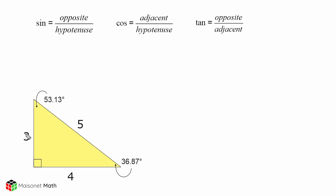Now with any 3, 4, 5 right triangle, the smallest angle is always going to measure 36.87 degrees, and the second largest angle is always going to measure 53.13 degrees, and of course we have our right angle, which is always 90 degrees.